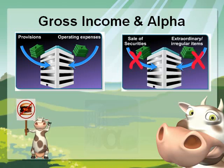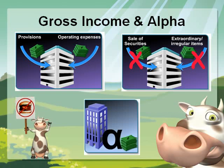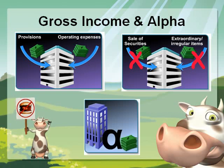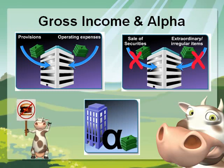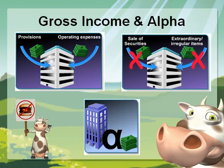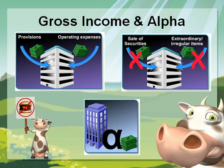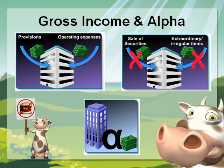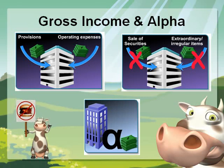Now let's talk about alpha. Alpha is a fixed factor set by the Basel Committee, and it serves as a proxy showing the wider relationship between the operational risk loss experience of a bank and the aggregate level of operational risk exposure as reflected in its gross income.